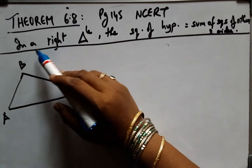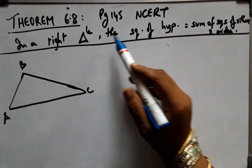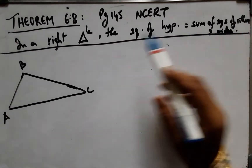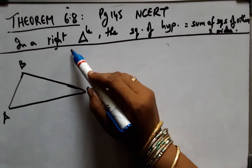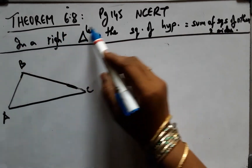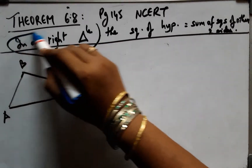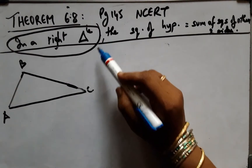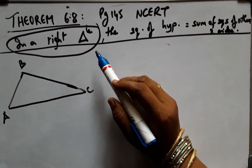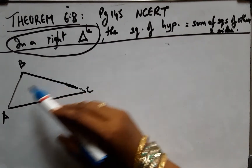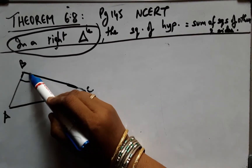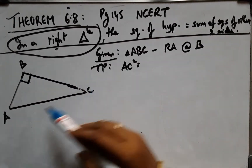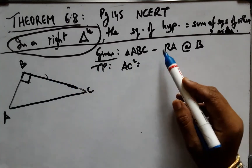Item 6.8: In a right triangle, the square of the hypotenuse is equal to the sum of squares of the other two sides. Given and to-prove parts are identified. We take triangle ABC with a right angle at B. To prove: hypotenuse square is equal to the sum of the squares of the other two sides.